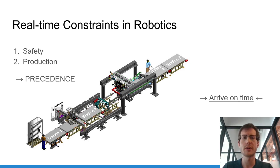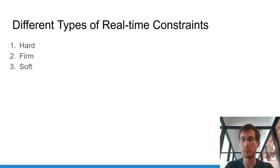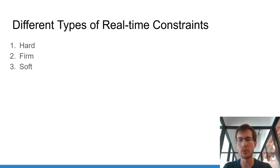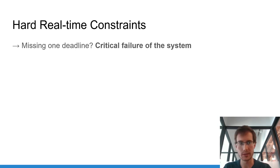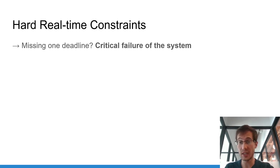Let's focus on the different types of real-time constraints, because missing a deadline does not necessarily have the same impact and consequences. There are three main types depending on your application and expected results: hard real-time constraints, firm, and soft. Let's see details about each with real-life examples.